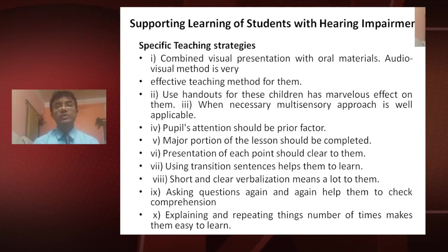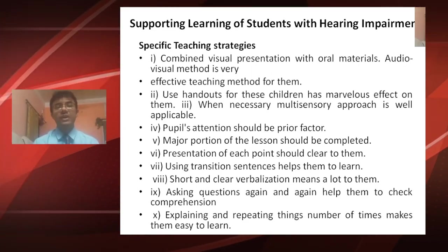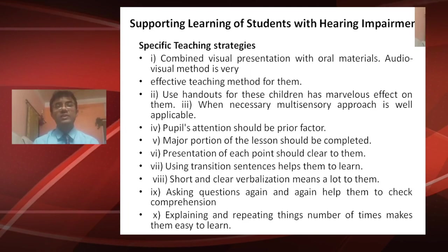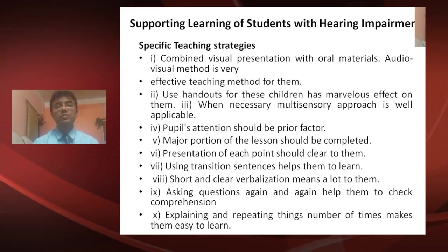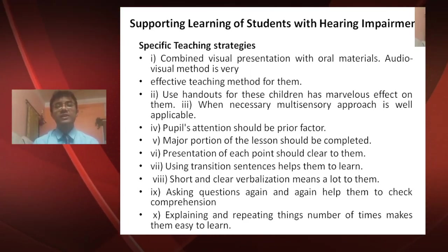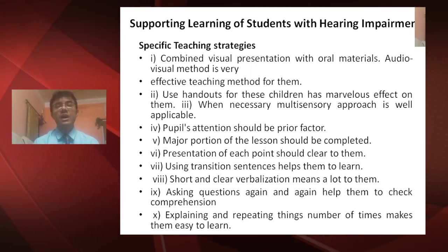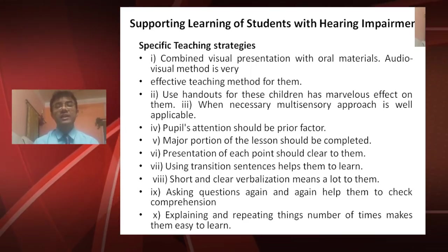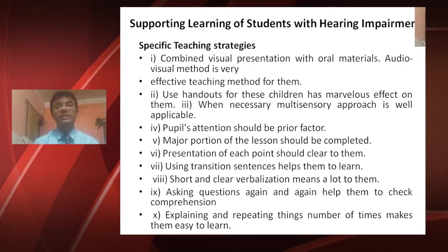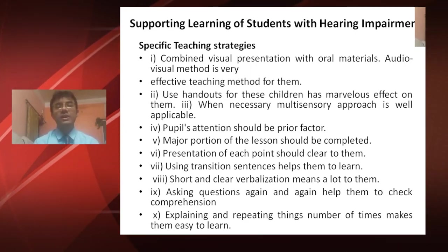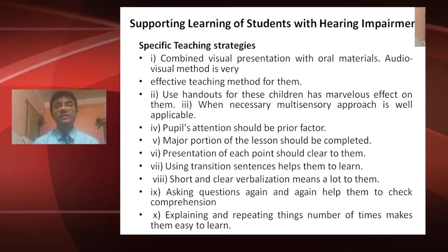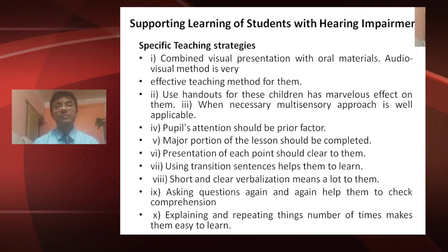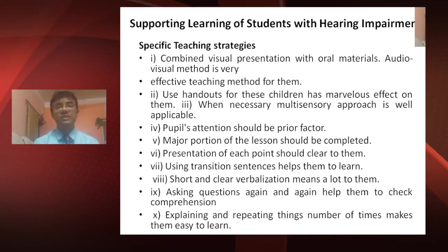The presentation of each point should be clear. Using transition sentences helps students learn. Short and clear verbalization means a lot to them. Asking questions repeatedly helps check comprehension, and explaining and repeating things multiple times makes it easier for students with hearing impairment to learn.